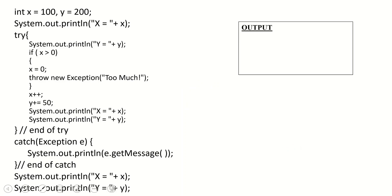So we will have the following example. It says: assume you have two variables, x and y. We have integer x equals 100, y equals 200. And then we will have a try block, catch block, and we will have to find the output.